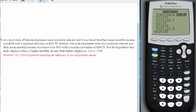Okay, number 17. The local store, 65 female employees were randomly selected, and it was found that their monthly income is $634 with a standard deviation of $121.50. 75 male employees were randomly selected and their mean monthly income was $676 with a standard deviation of $168.70. Test the hypothesis that male employees have higher monthly income than female employees.